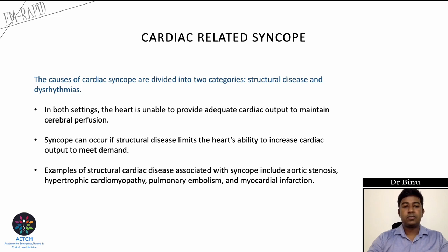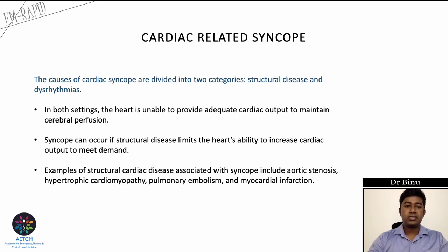Cardiac-related syncope can be divided into two categories: structural heart disease and dysarrhythmias. In both settings, the heart is unable to provide adequate cardiac output to maintain cerebral perfusion. Syncope in structural heart disease limits the heart's ability to increase cardiac output to meet demand. Examples include aortic stenosis, hypertrophic cardiomyopathy, pulmonary embolism, and myocardial infarction.